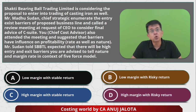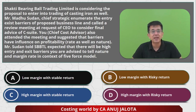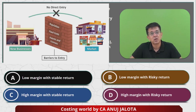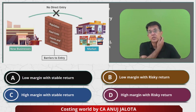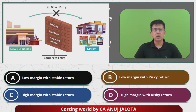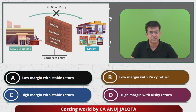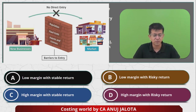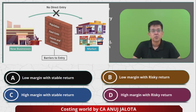You should always know that whenever you enter any business, there may be entry barriers due to various reasons. For example, if we are a new business, there could be regulatory barriers — in India, you cannot manufacture guns; the defense sector is basically reserved for the government and for very large companies like L&T and so on.